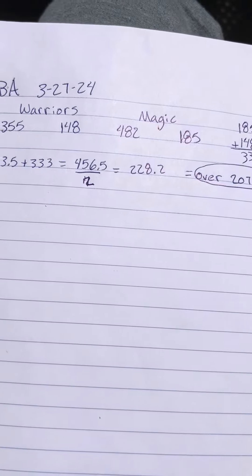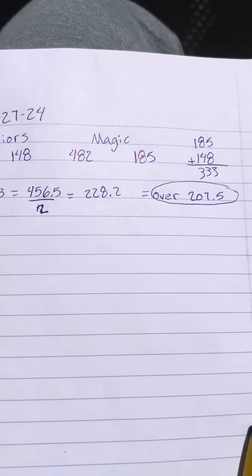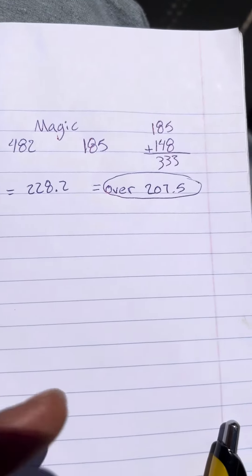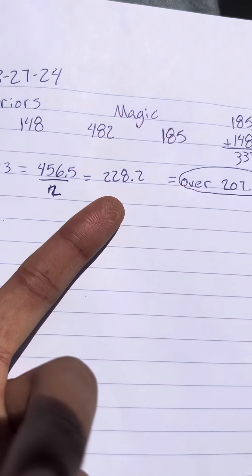So basically, the total score of the combined points that the Warriors and the Magics gonna score, we got 228.